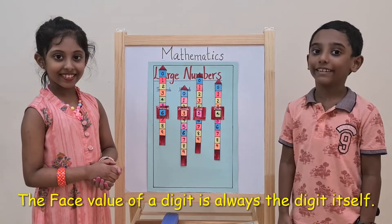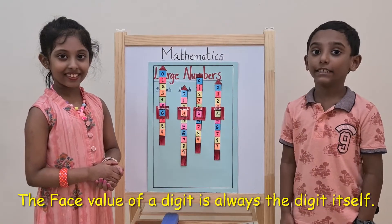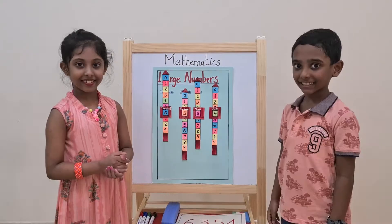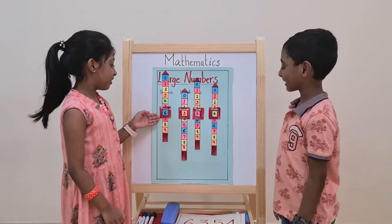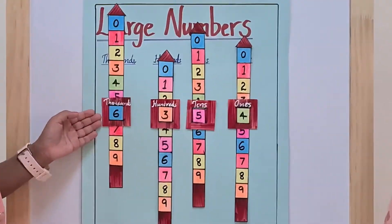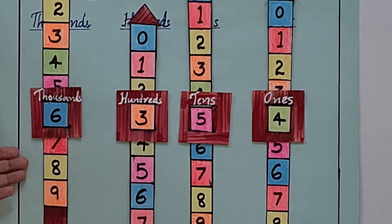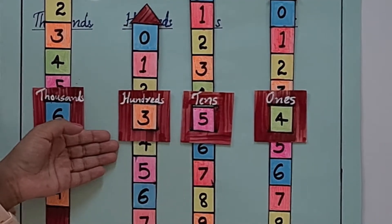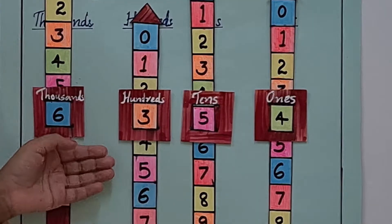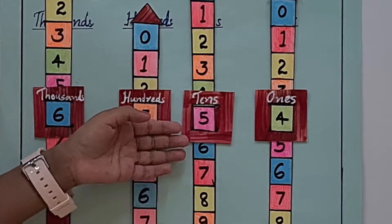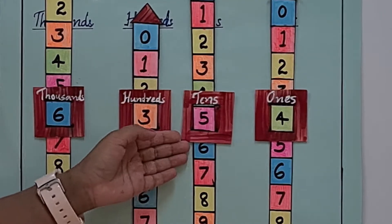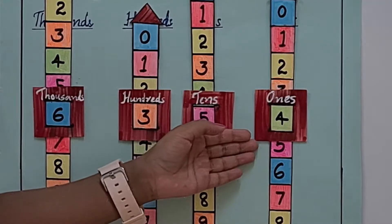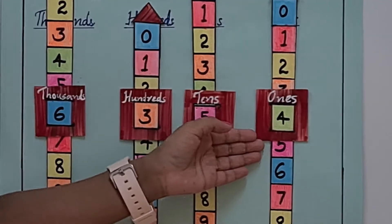The face value of a digit is always the digit itself. Here, for the digit 6, its face value is 6. Next, for the digit 3, its face value is 3. For the digit 5, its face value is 5. For the digit 4, its face value is 4.